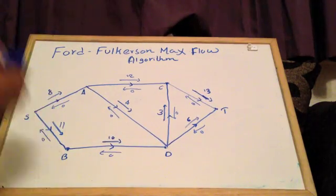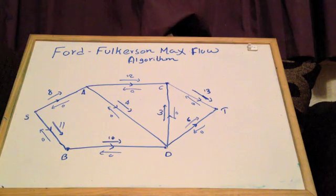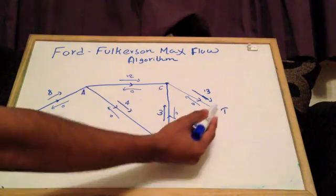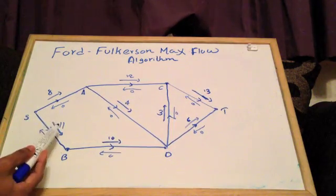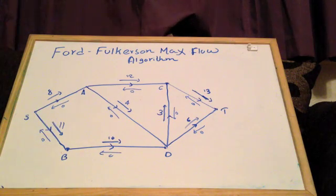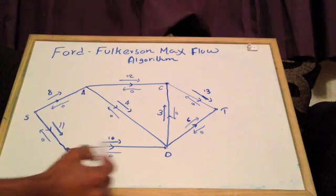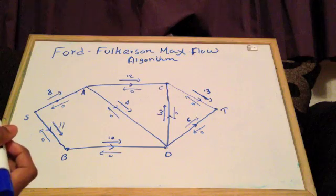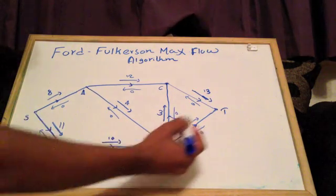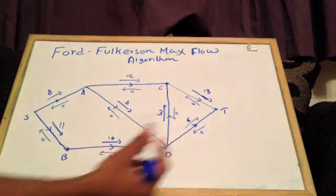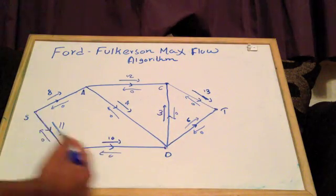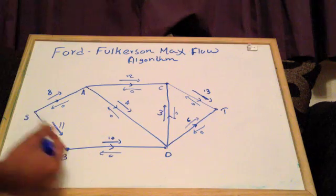To get started, we can use inspection to find an initial flow from S to T. Looking at S to B, you can send 11 through that; B to D, you can send 10; and D to T, you can send 6. The flow along this path is going to be limited to 6, because 6 is the maximum you can send through D to T.